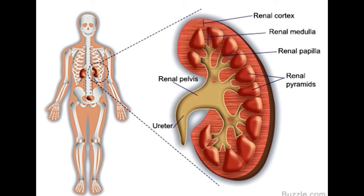The ducts of every individual renal pyramid empty into the renal pelvis, which leads to the ureter, which connects the kidneys to the urinary bladder. Most of the nephron lies in the outer region of the kidney, the renal cortex.